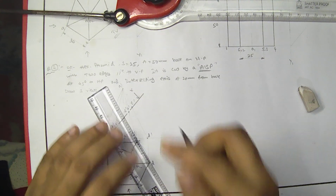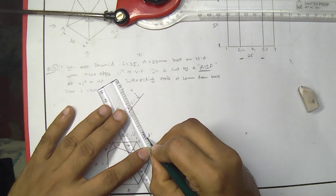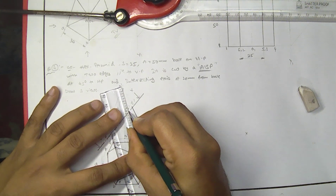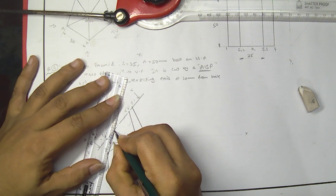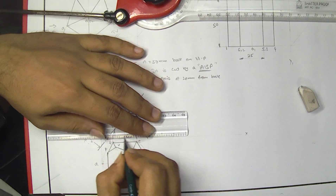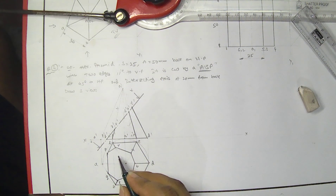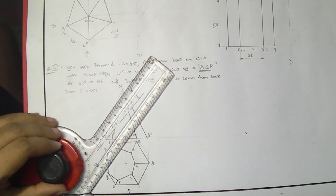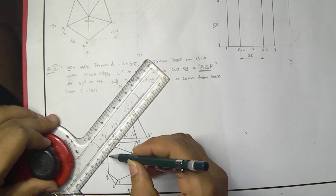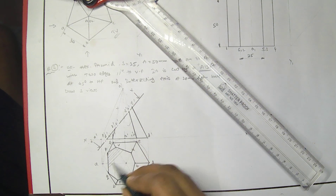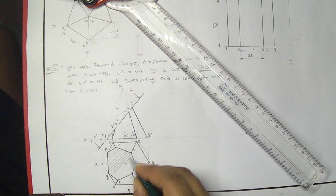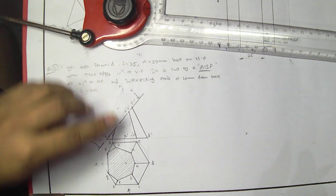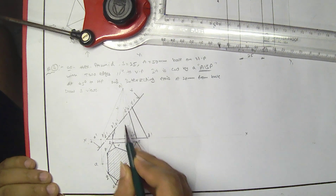These lines would be dark because this is removed and this is remained. This is a sectioned part, so we have to hatch it at 45 degrees. So this is removed, this is remained. Here: this is removed, a light one; this is dark — the main thing. Now I am going for the side view.